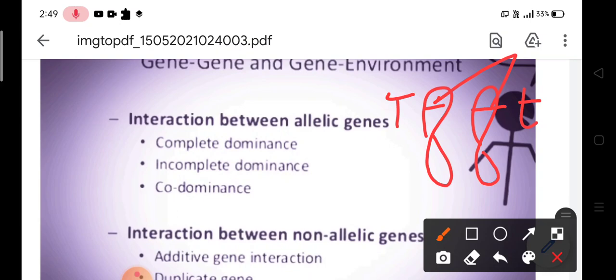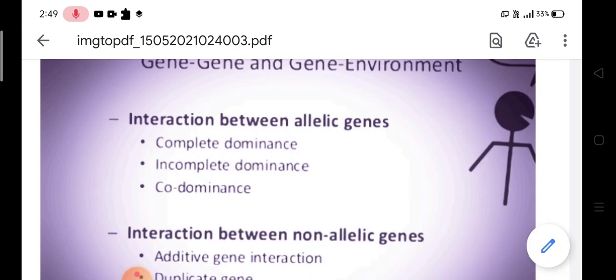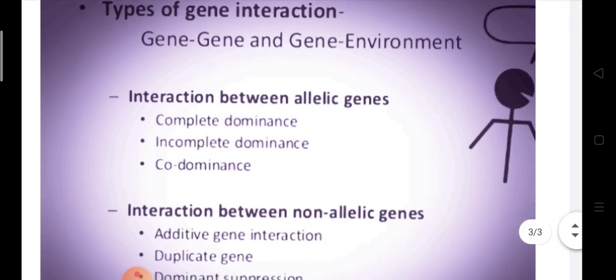If we see the examples of allelic genes, it is complete dominance, incomplete dominance, or co-dominance. We will be discussing all these interactions in detail in our further classes.